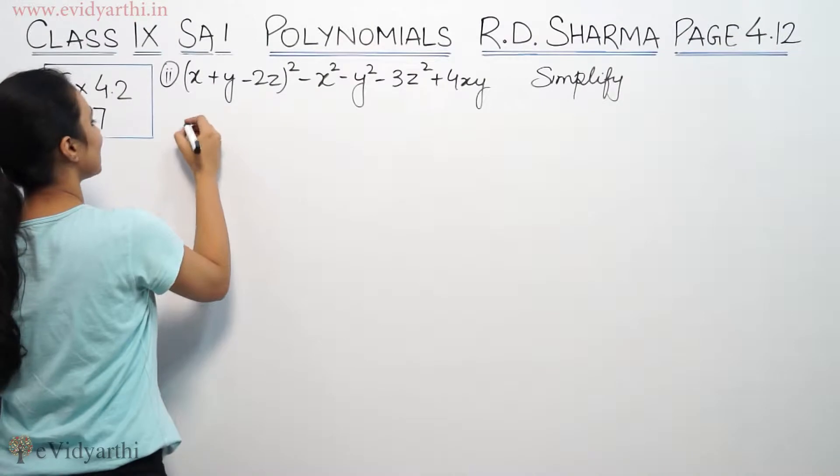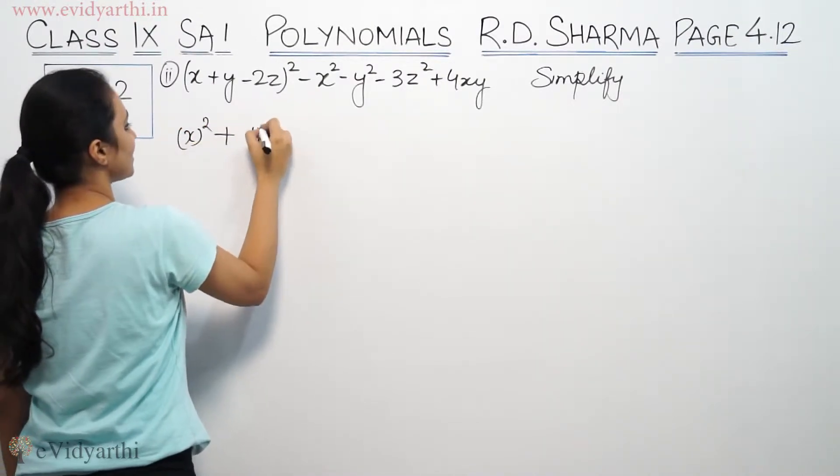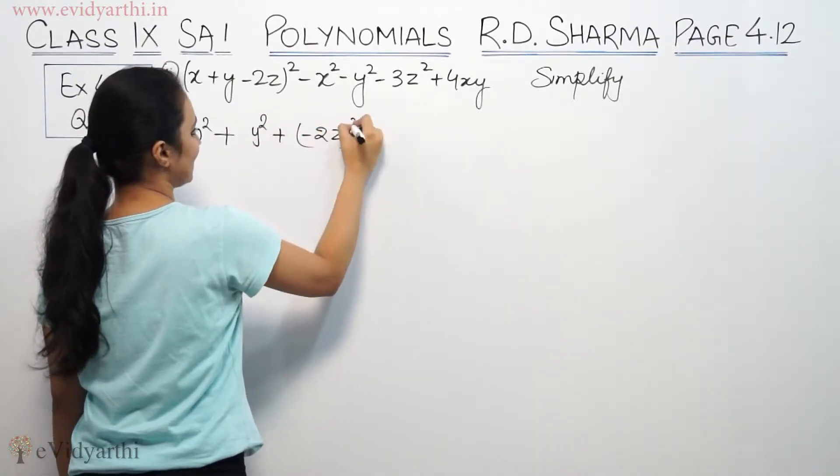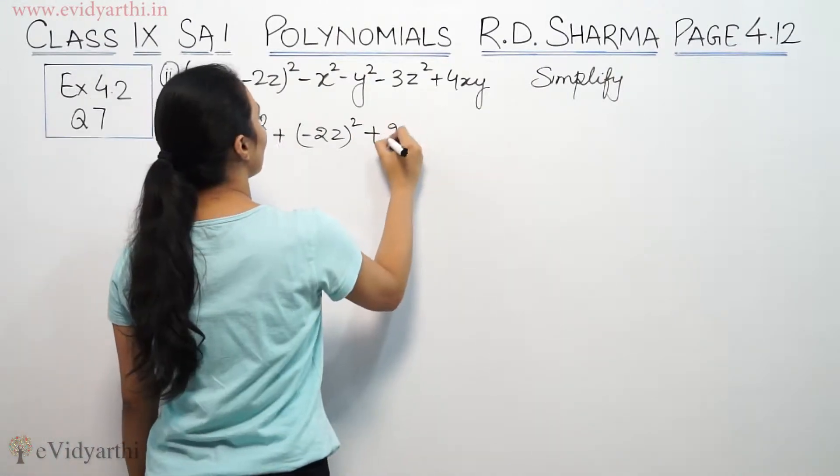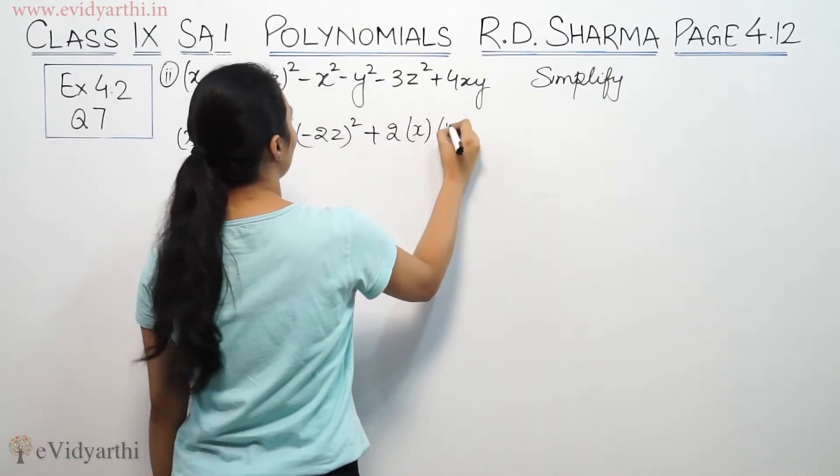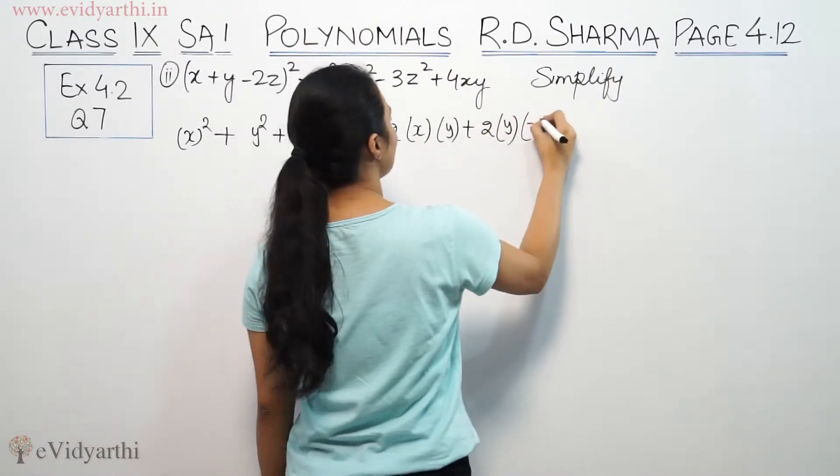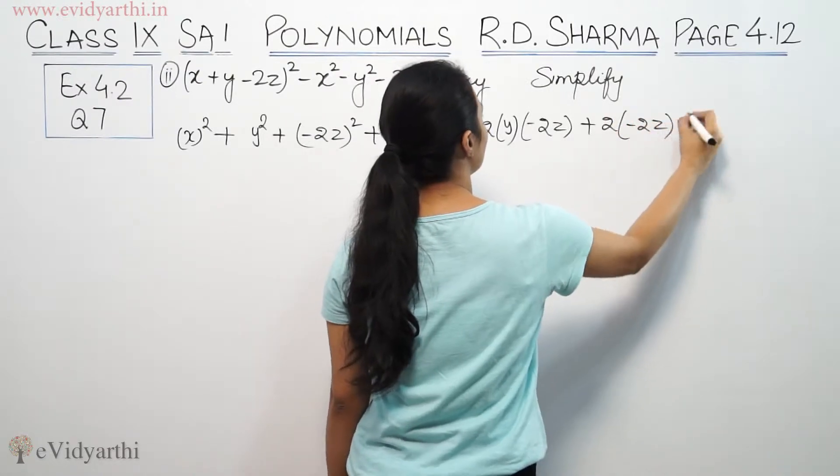(a+b+c)² is basically a² + b² + c². c² is negative here, so negative c² plus 2ab + 2bc + 2ca.